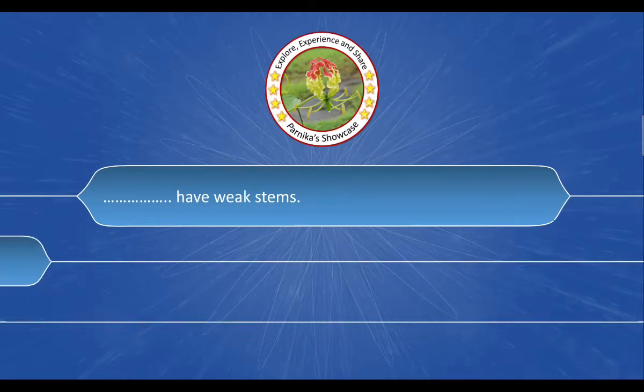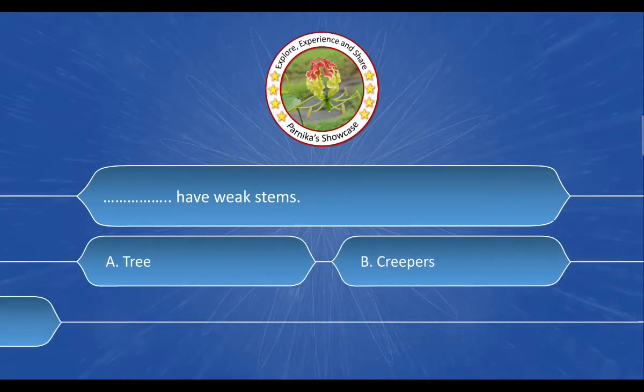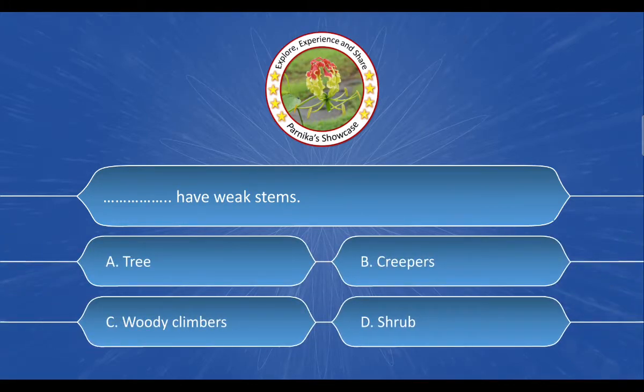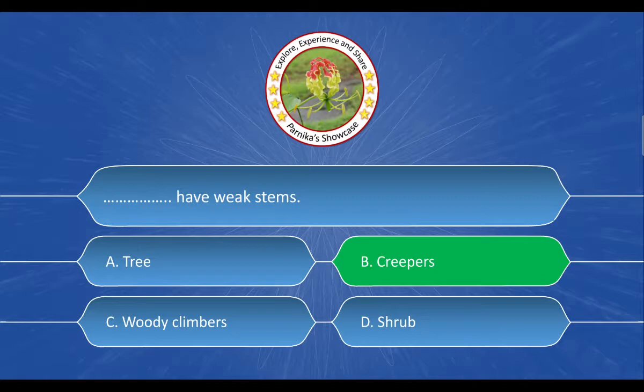Next question: Dash have weak stems. The options are A. Tree, B. Creepers, C. Woody Climbers, D. Shrub. And the correct answer is Option B. Creepers.